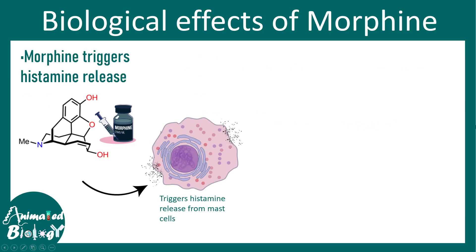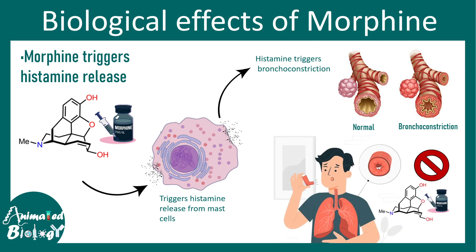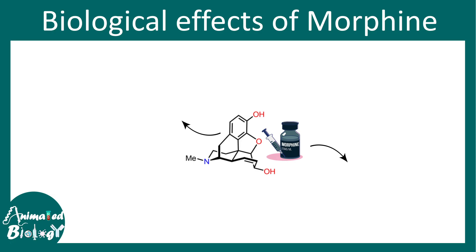Morphine can trigger histamine release from mast cells. Histamine is a potent modulator of allergy and can lead to multiple effects. Histamine triggers bronchoconstriction — that means the bronchioles, the small airways in the lung, become smaller and smaller, making it difficult to breathe. For people who are suffering from asthma, COPD, or similar conditions, they should not take morphine for this particular reason.